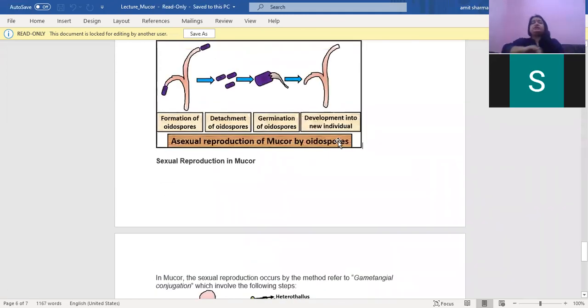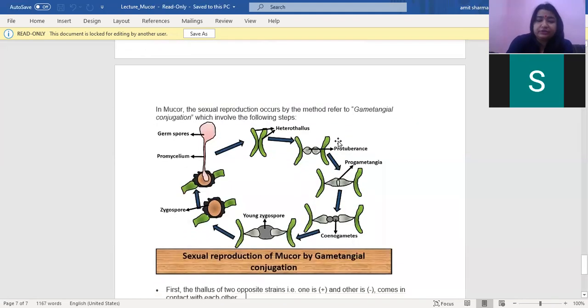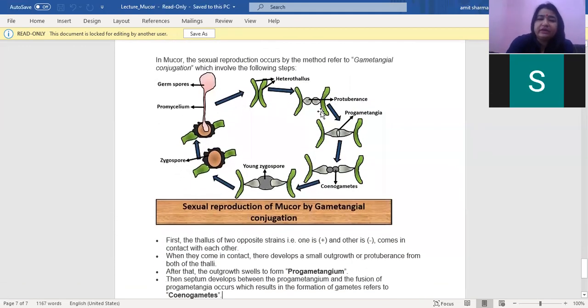Coming towards sexual reproduction in MUCR, it is a specialized type and occurs by gametangial copulation. The two thalli, one from the plus strain, another from the minus strain, come in contact with each other. When they come in contact, they develop a small outgrowth called protuberance. The wall between the protuberance breaks and forms progametangia. When the protuberance swells up, they form the progametangia and the progametangia then fuse.